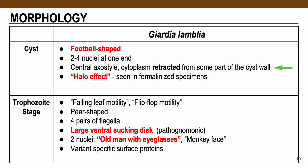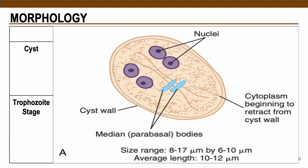In cases of formalin-fixed specimens, a halo effect may be seen with these types of parasites. Here is a sample picture of the cysts of Giardia lamblia, showing the presence of 2–4 nuclei. The more nuclei present on the cyst, the more mature it is. Also note the centrally located axostyle and the retracted cytoplasm, just as seen in this picture.